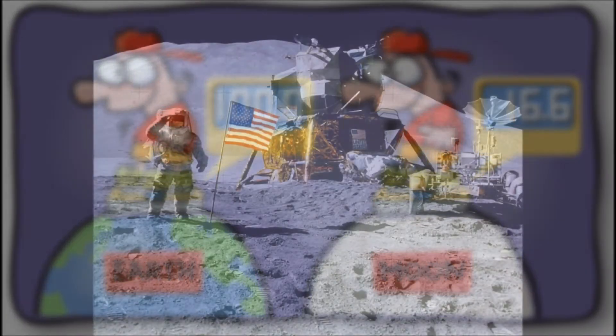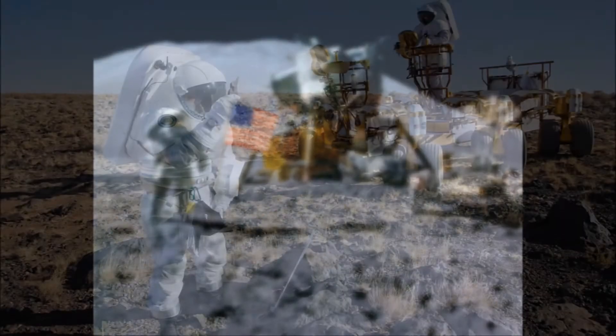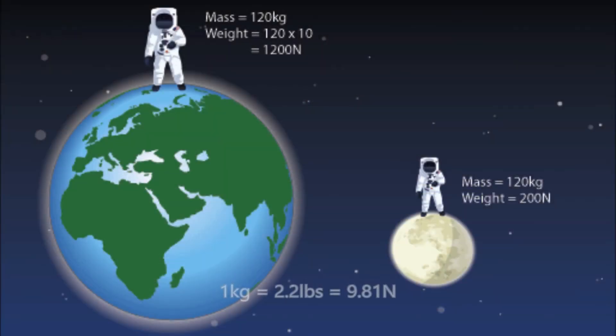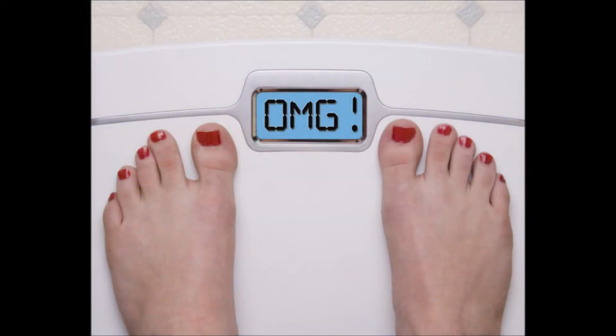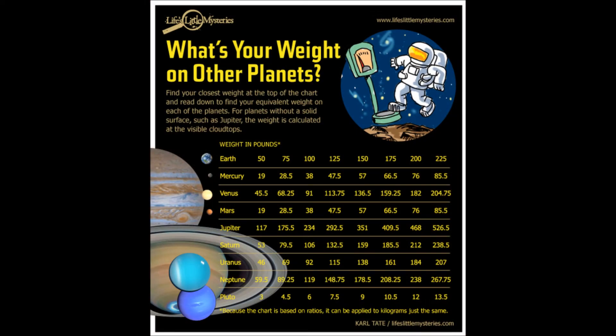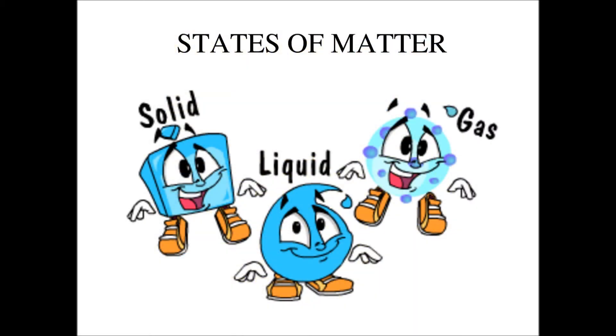On the Moon, my mass remains 70 kilograms, like it is on Earth, or in orbit, or anywhere else. But my weight is no longer 70 kilograms. It's only about 11.6 kilograms. On a bathroom scale taken from Earth and deposited on the Moon, it would only register 11.6 kilograms, or about 26 pounds. 11.6 kilograms of Moon weight is the effect of its gravity on my mass, on the 70 kilograms of stuff that I'm made of.